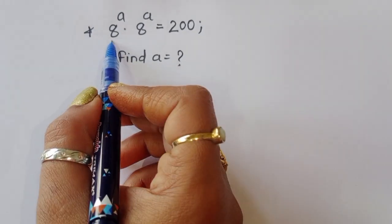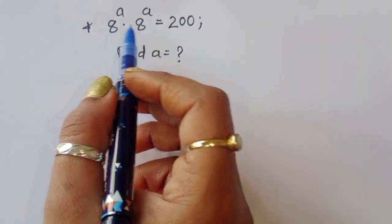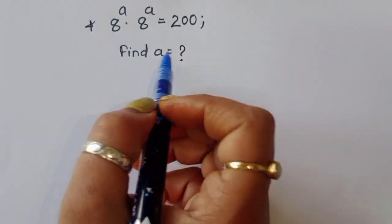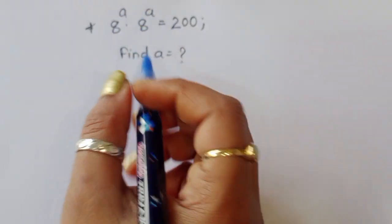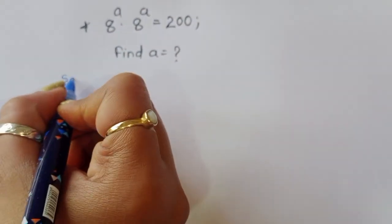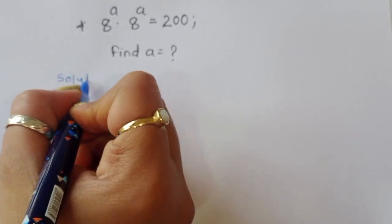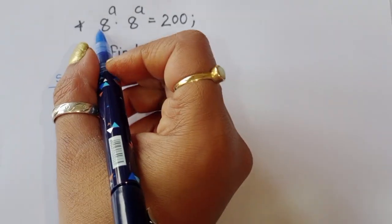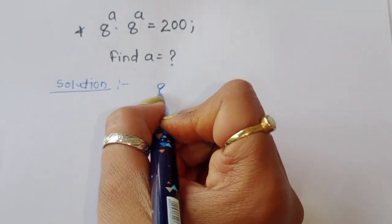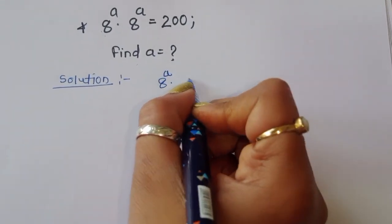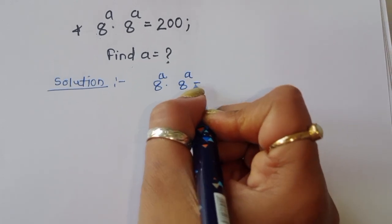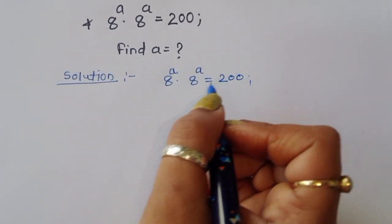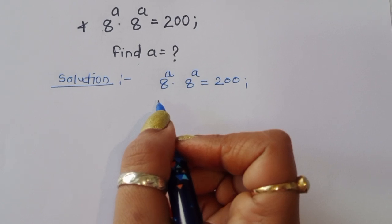The question is: given 8 power a times 8 power a equals 200, we have to find out the value of a. Let's see the solution. So 8 power a times 8 power a is equal to 200 — this is the question.